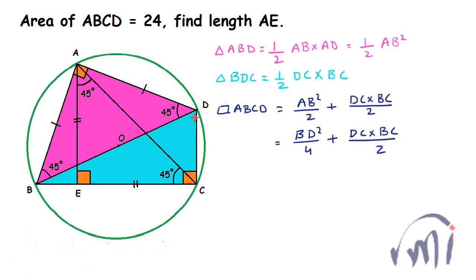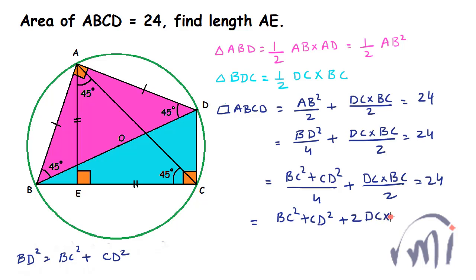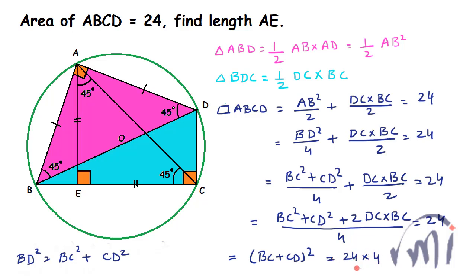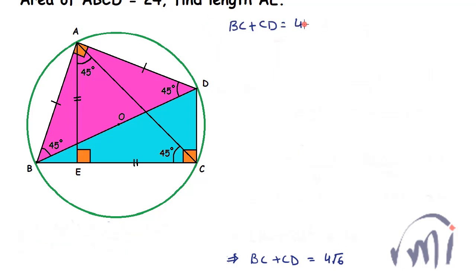Triangle BCD is also a right angle triangle, so BD squared equals BC squared plus CD squared. Substituting back, the total area becomes BC squared plus CD squared divided by 4 plus DC times BC divided by 2, which simplifies to BC plus CD, the whole quantity squared, divided by 4, equal to 24. So BC plus CD whole squared equals 96, giving BC plus CD equals 4 root 6.